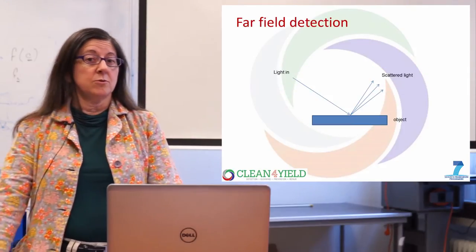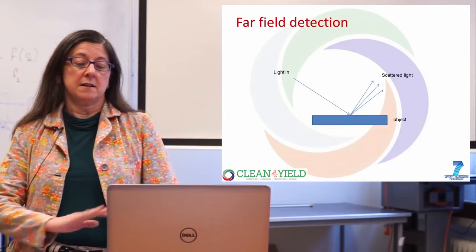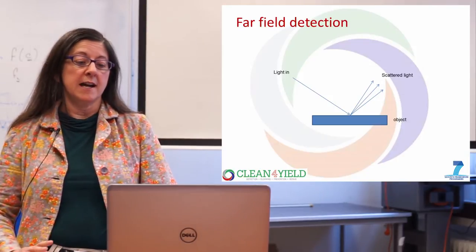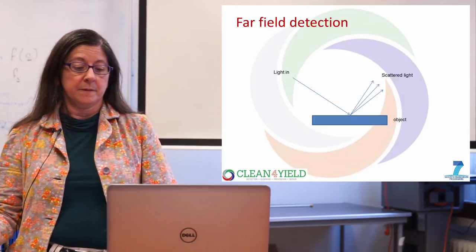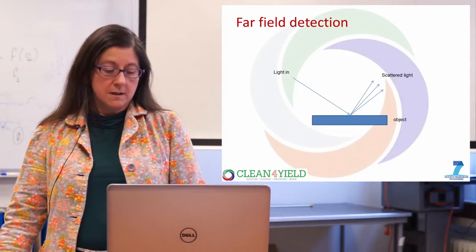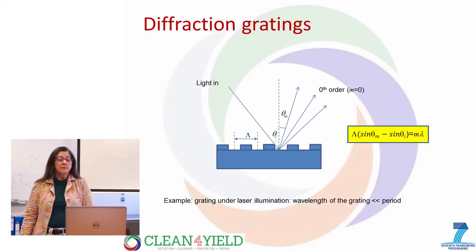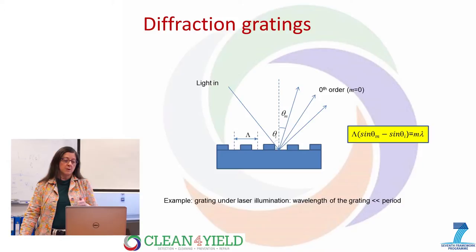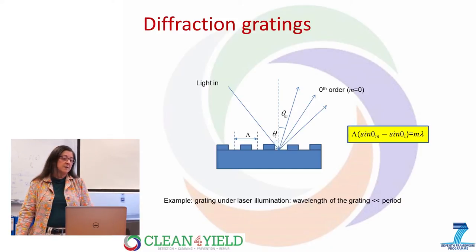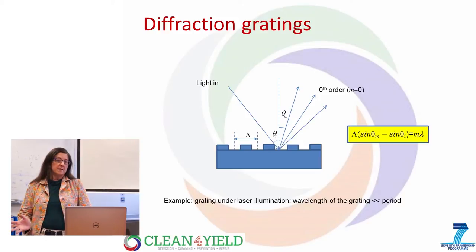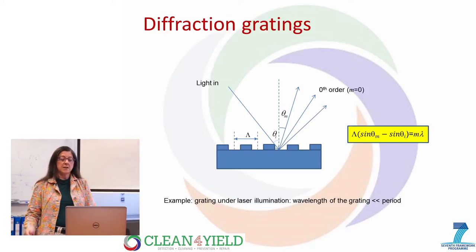First I would like to talk about the far-field detection, which means that I have an object, I shine light into the object, and I look at the scattered light. So suppose you have a diffraction grating, which is a periodic sequence of lines on top of a certain surface, and if you have light shining at a certain angle, you see the scattered light as shown here by the arrows.